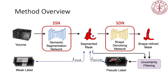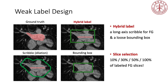Our model consists of a semantic segmentation network (SSN), which predicts an initial segmentation mask, and a shape denoising network (SDN), which applies the self-taught shape prior for mask denoising and refinement. We adopt an iterative learning framework. To train our model, we propose a sparse weak annotation scheme, including a hybrid label design and slice selection.